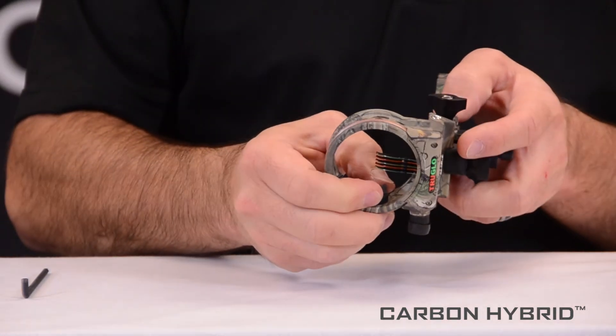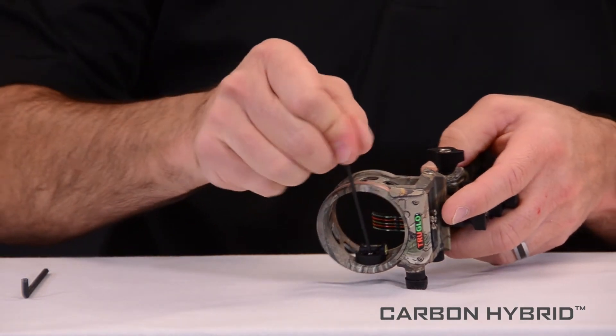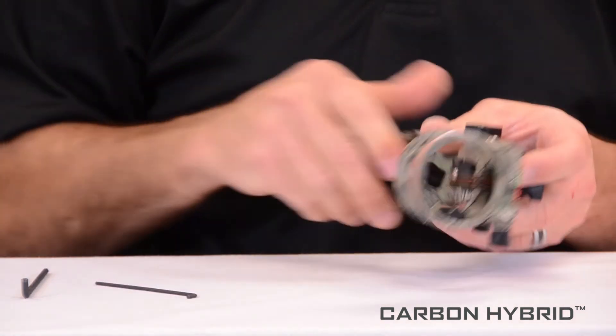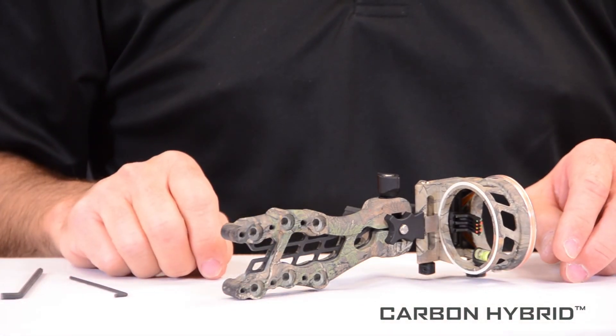Then you'll want to make sure that the level is fairly square to the pins and snug it up. From that point, you're set to install it on your bow in the left-hand position.